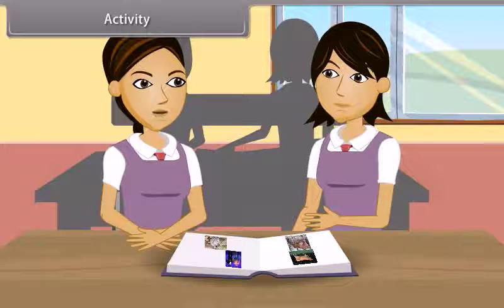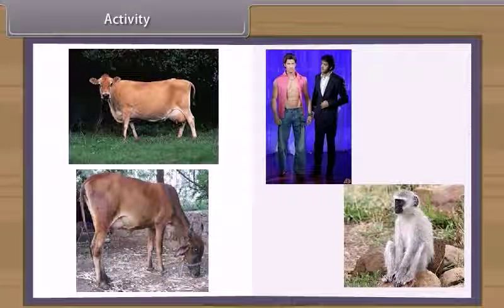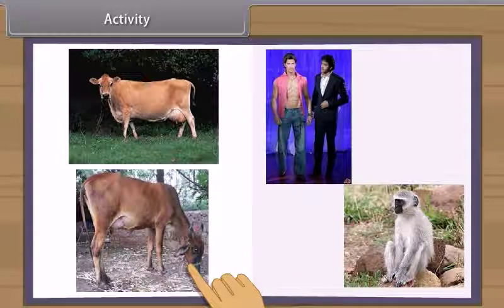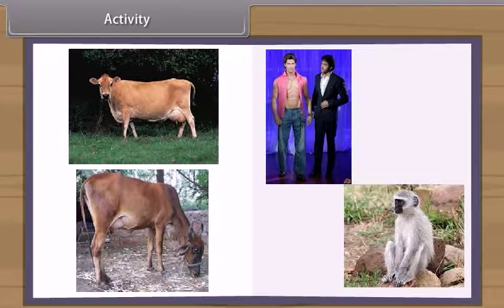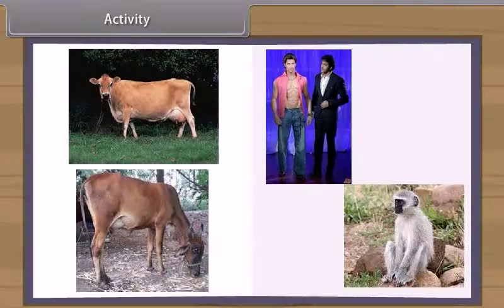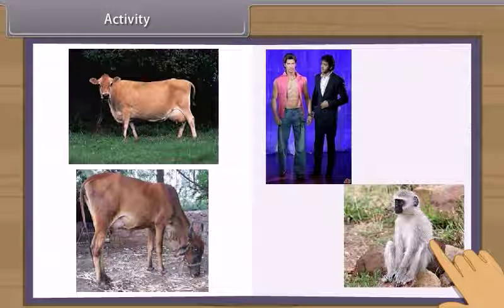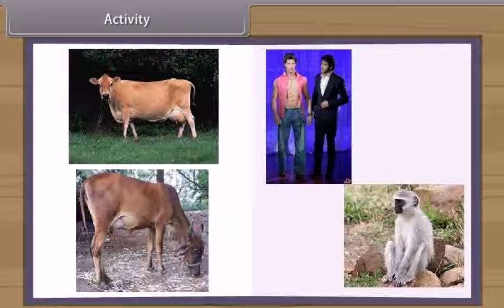Let us do an activity to find out the similarities within a genus and differences among various genera. When we study physical characters of desi cow and jersey cow, we find very few differences. But when we see them in a crowd, jersey cow can be distinguished from a distance due to its height and stature. But when we look at cow and monkey, then we find that man resembles more to a monkey than a cow, although all are mammals.